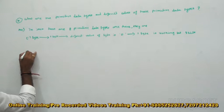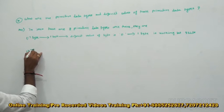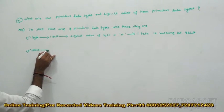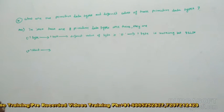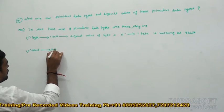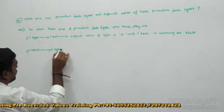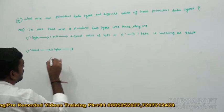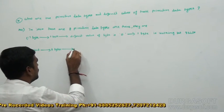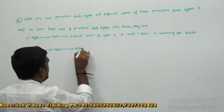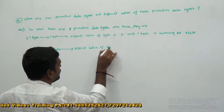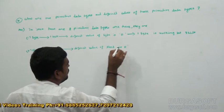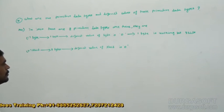The second data type is short. Short is an integer data type and it is going to be occupied by two bytes of information. The default value of short is zero.